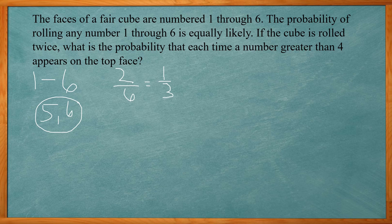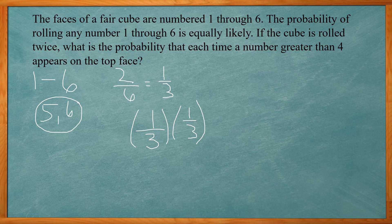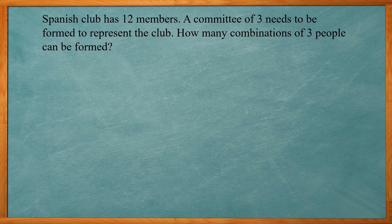We're doing two events: rolling the cube and then rolling it again. These are independent because the first roll doesn't affect the second. So we multiply the probabilities together: one-third times one-third. Multiplying the fractions, one times one is one and three times three is nine, giving us one over nine. The probability of getting a number greater than four twice is 1/9.